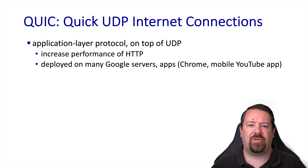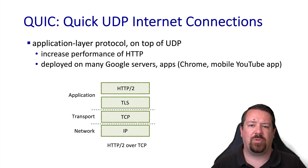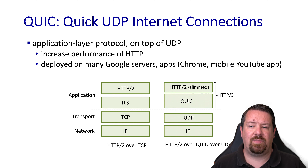The primary development driver here is Google, hoping to increase the speed at which web pages can be loaded for consumers. So where HTTP 2 combined with TLS used TCP over IP, HTTP 3 is a combination of the HTTP 2 directives with the QUIC protocol running over UDP.